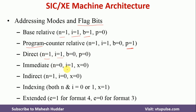If I=1, it is immediate addressing mode; in that case, X must be 0. Similarly, if N=1, it is indirect addressing mode, and X must also be 0. If X=1, regardless of the values of N and I, it is called index addressing mode. Finally, if E=1 it is format 4, and if E=0 it is format 3.